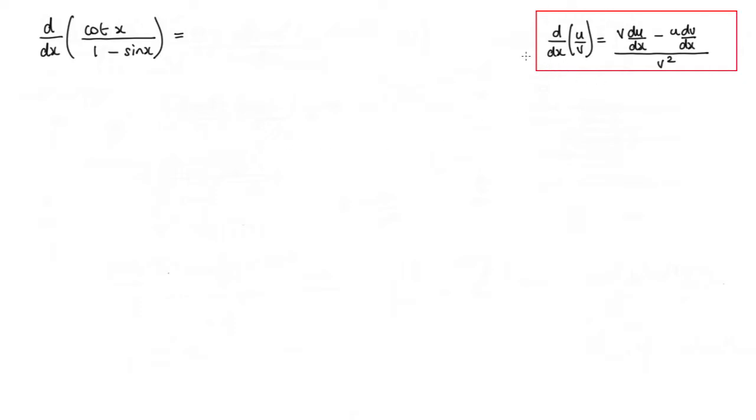And just as a reminder, I've placed it over here on the right hand side. So the first thing to do is to define what u and v will be. So obviously u will be cot x and v will be 1 minus sin x. And I'll do that over here.